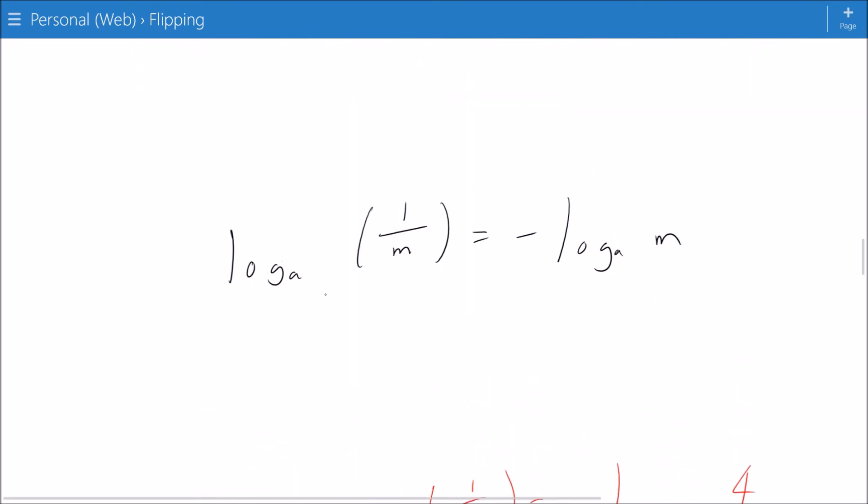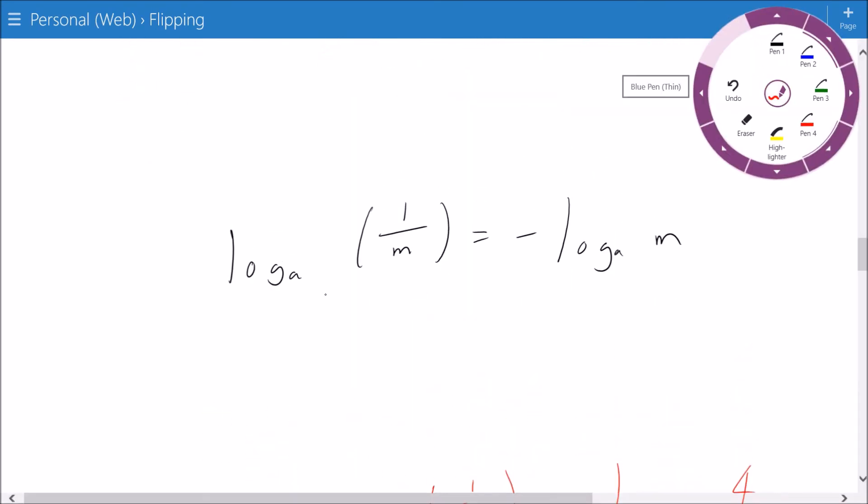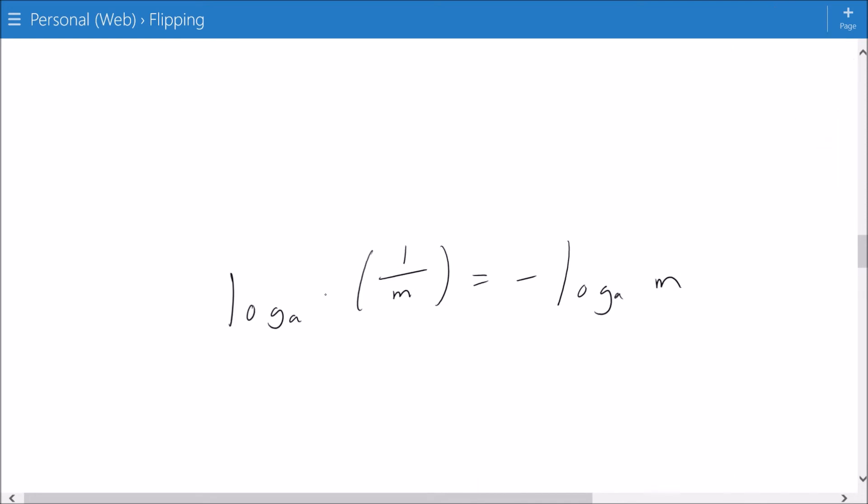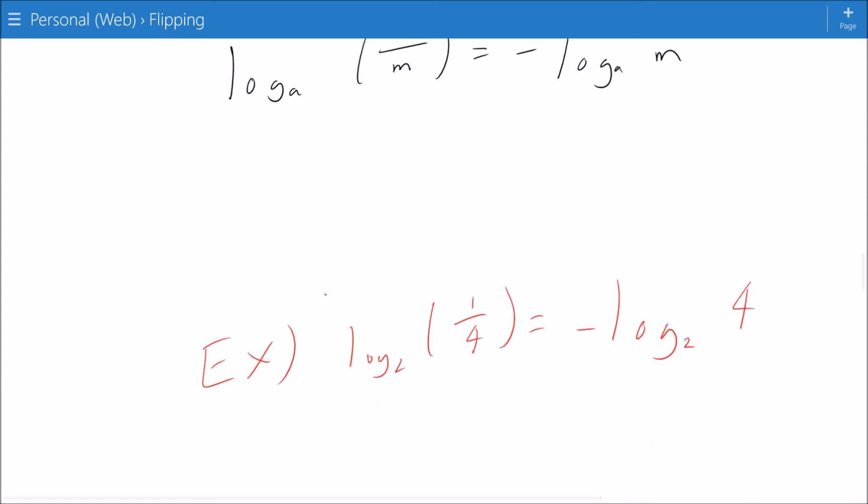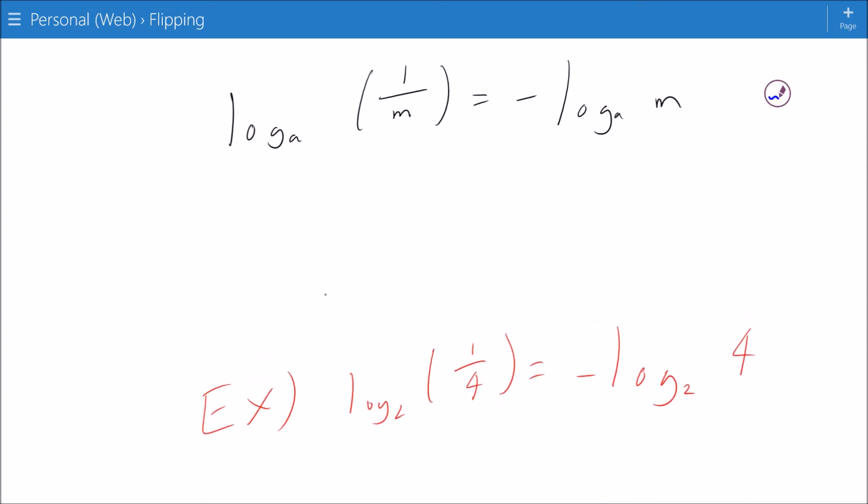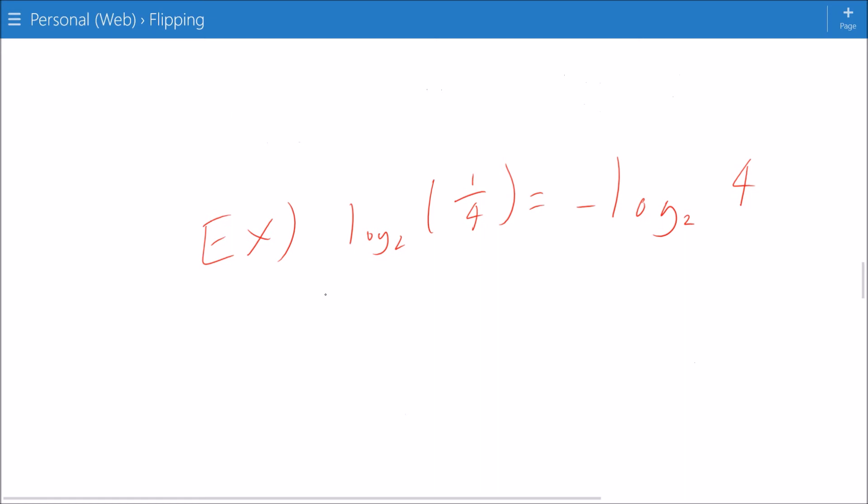How about another? I've got log base a of the quantity 1 over m is equal to negative logarithm base a of m. An example to see how this works. I should have log base 2 of 1 over 4 is equal to negative log base 2 of 4.